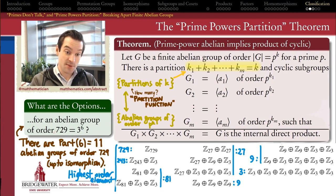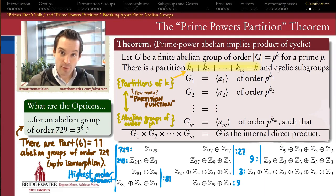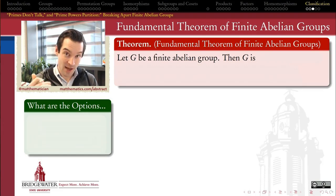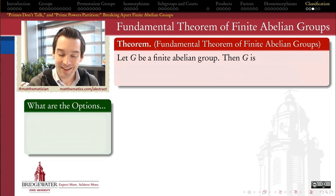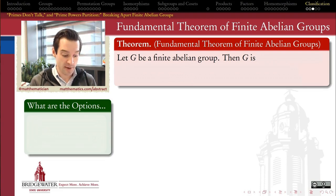So: Primes Don't Talk lets us break our group apart, and Prime Powers Partition gives us a list of what each of the pieces can look like. Now we're ready for the fundamental theorem. You can always gauge a theorem's importance by how many assumptions go into it — when you see a theorem that only says 'let G be a finite abelian group, then...', this is a pretty powerful theorem. It tells us something true of every single group that is both finite and abelian, just those two ingredients.